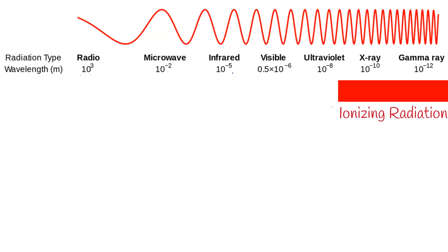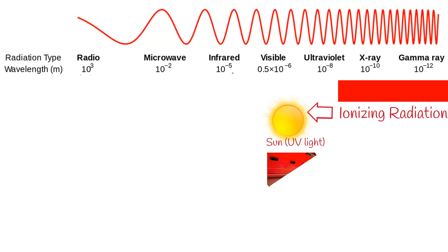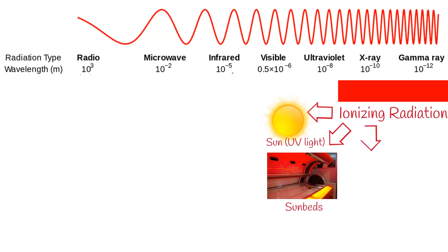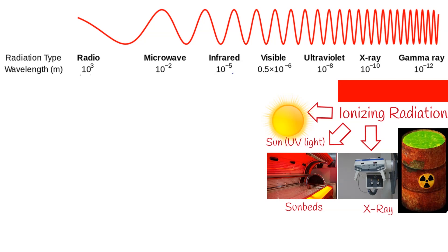Examples of ionizing radiation include sunlight, sunbeds, x-ray machines, and radioactive waste.